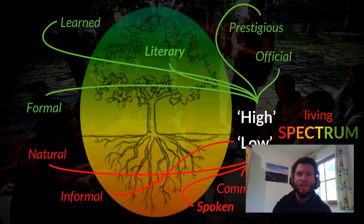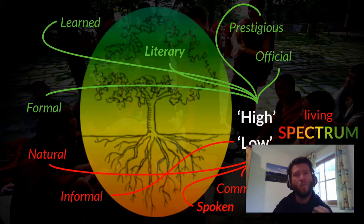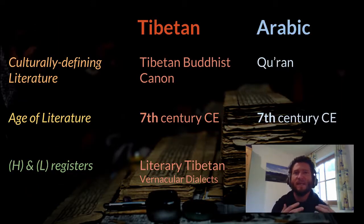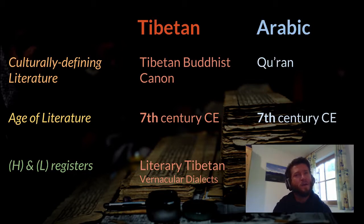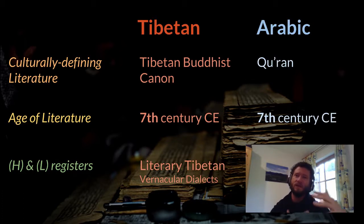We have to realize that English and modern European languages now use vernacular and spoken language for reading and writing, but historically that hasn't been the norm — historically, the situation that Tibetan is in was the norm. When looking at languages today similar to Tibetan, classical Sanskrit isn't very close given the time period. Something much closer is Arabic: we have a culturally defining literature — the Tibetan Buddhist canon versus the Quran — an age of literature still used for reading and writing from around the seventh century, and today a separation between the high and low language.